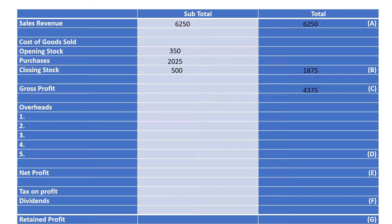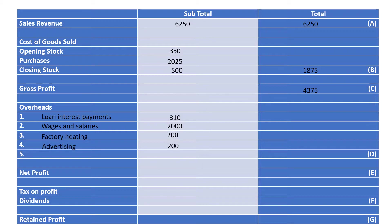We now look at the other costs the business will have incurred — we call these overheads. These are the costs which don't directly relate to making the item but are involved in the production and selling of it. Number one is a loan interest payment. We have wages and salaries for the staff, factory heating to keep the factory warm while people are working, advertising to promote our products, and administration — doing the finances, human resources, all of that sort of stuff. We then add up those figures and that gives us £3,710.